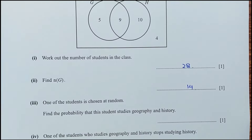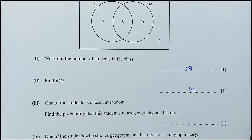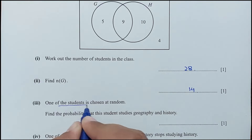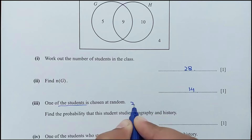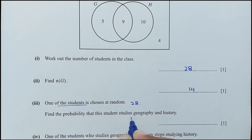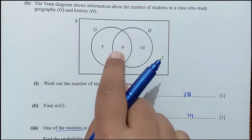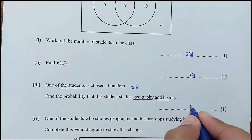For part 3, one student is chosen at random from 28 students. Find the probability that this student studies both geography and history. The intersection of geography and history contains 9 students, so the probability is 9 out of 28.